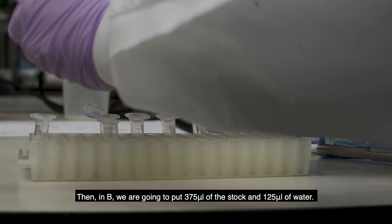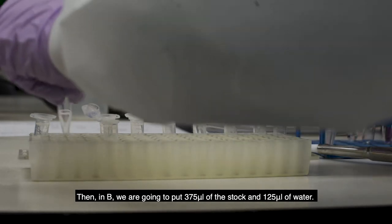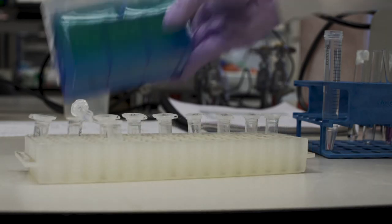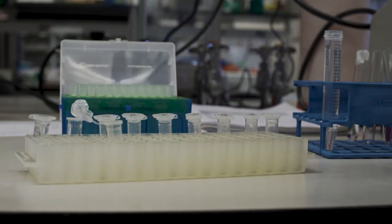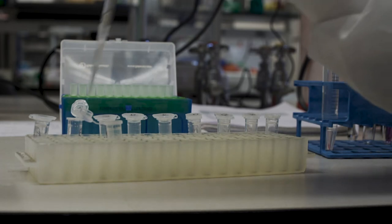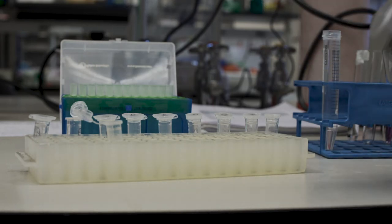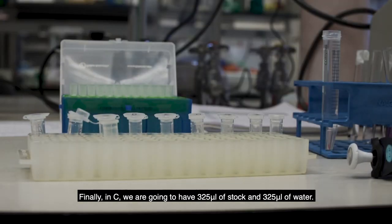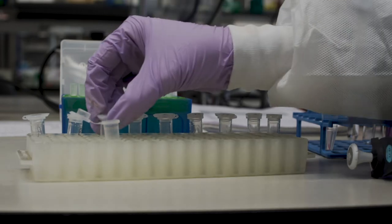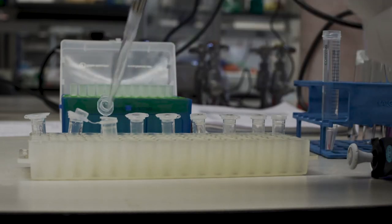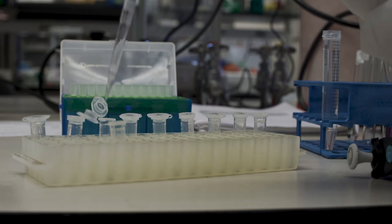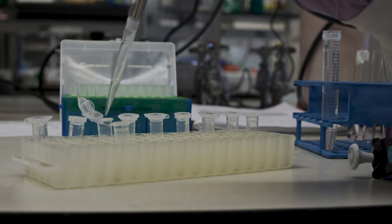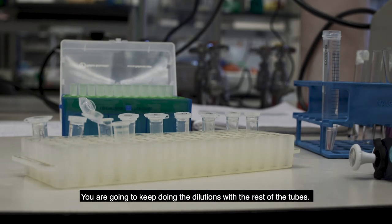And in B, we're going to put 375 microliters of the stock, and then 125 microliters of water. And then finally in C, we're going to have 325 microliters of stock, and then 325 microliters of water. And then you're just going to keep doing the dilutions with the rest of the tubes.